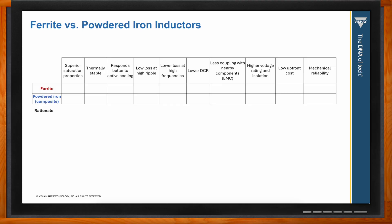All inductors built with a magnetic core lose their inductance as current increases — this is known as saturation. Between powdered iron and ferrite, powdered iron has the best inductance stability, with a soft saturation curve instead of the hard drop-off for ferrites, meaning less tuning and more predictable ripple behavior in the converter.